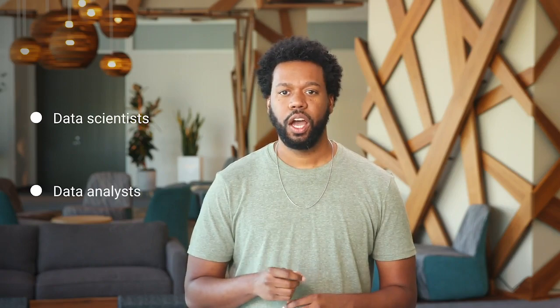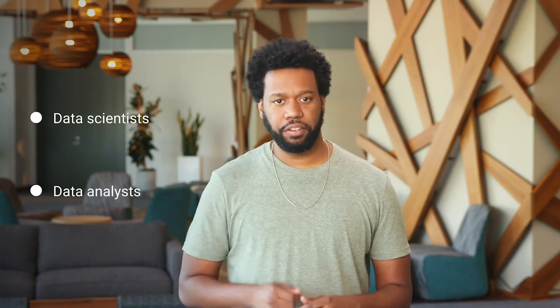Now let's talk about some common misconceptions you might come across. First is the difference between data scientists and data analysts. It's easy to confuse the two, but what they do is actually very different. Data science is defined as creating new ways of modeling and understanding the unknown by using raw data. Data scientists create new questions using data, while analysts find answers to existing questions by creating insights from data sources.